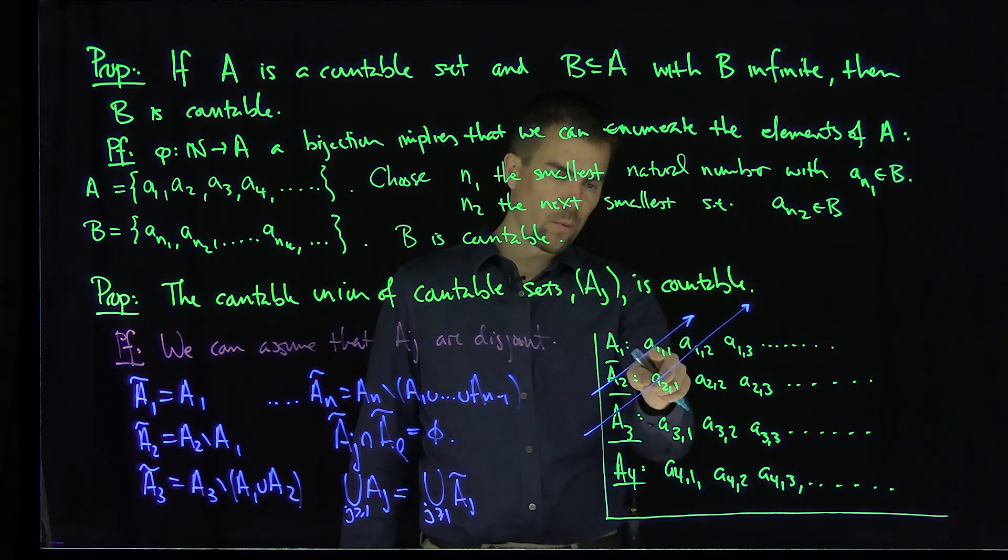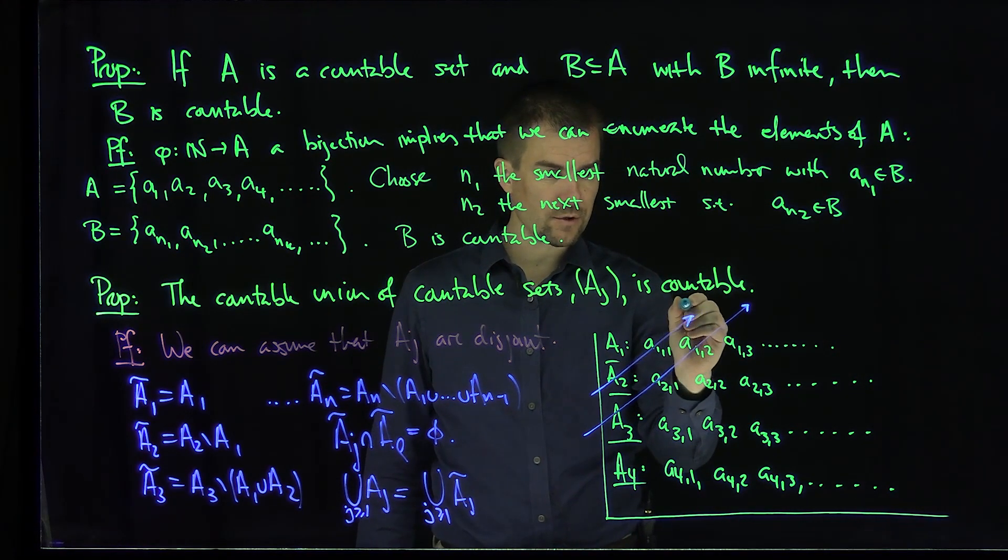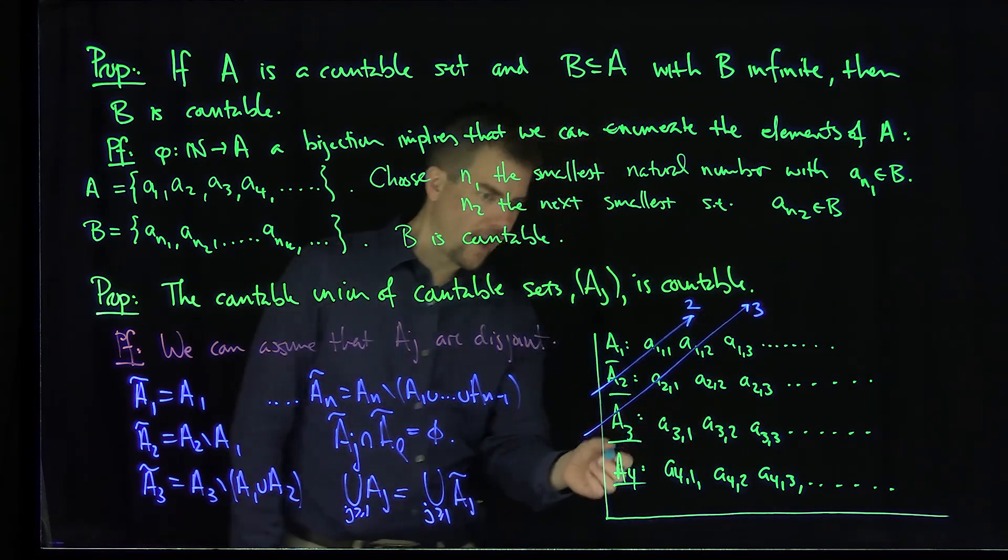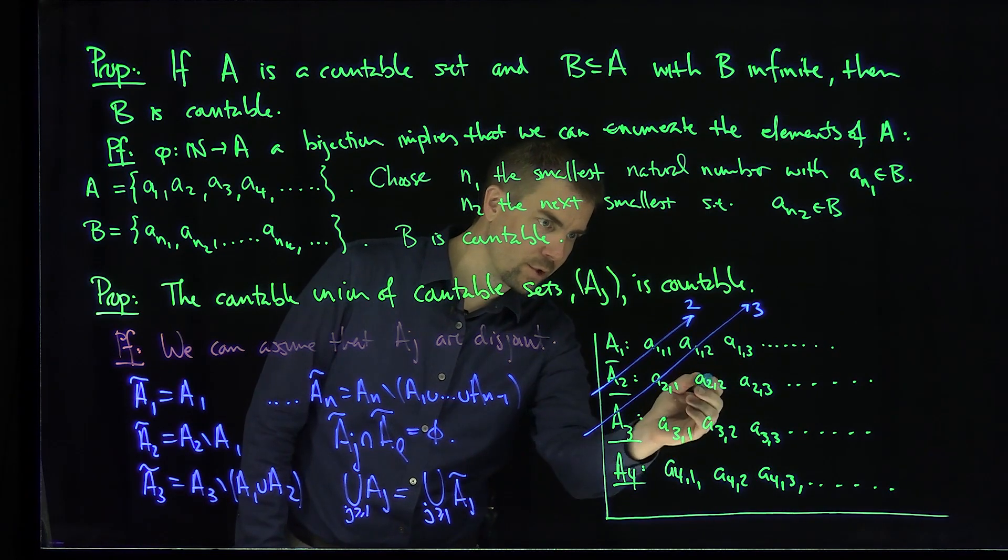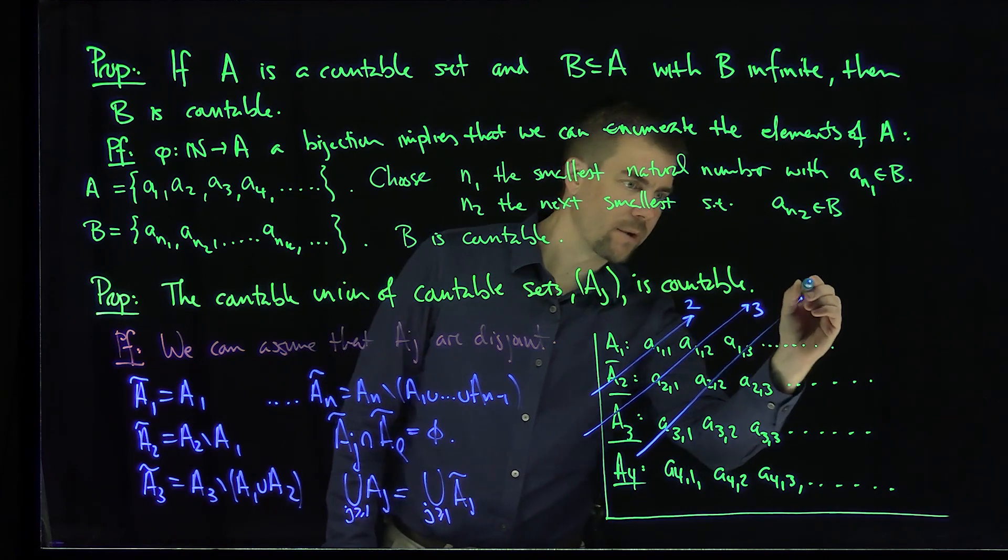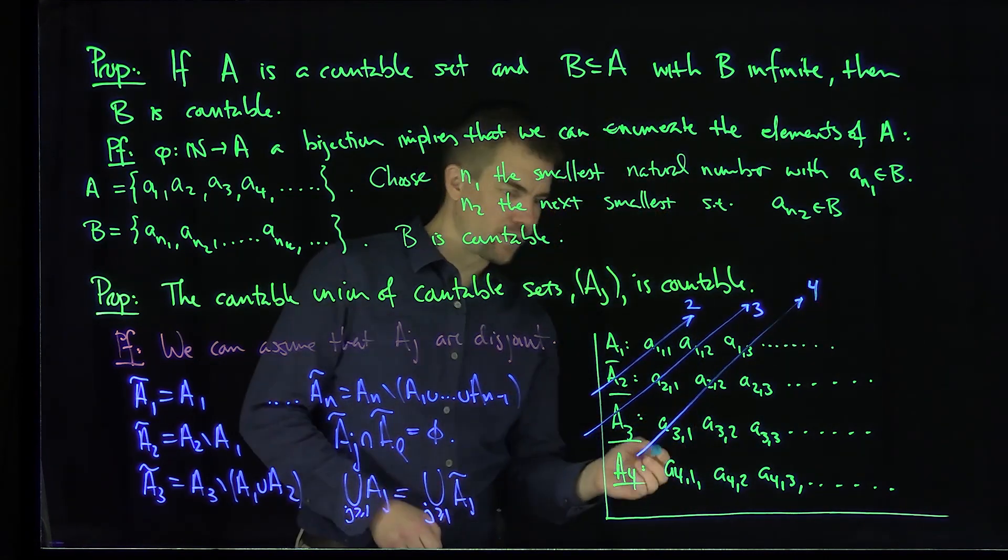And so we can notice over there that when I go through A1,1, the indices add to 2. Over here the indices add to 3. I can go with this tilt line from A1,3 to A2,2 to A3,1, like so. That is my 4 height line, and I can keep doing this procedure indefinitely.